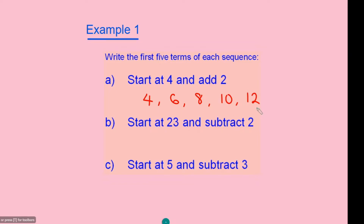For question B, we start at 23 and subtract 2. So the sequence looks like this: 23, subtract 2 gives 21, subtract 2 gives 19, subtract 2 gives 17, subtract 2 gives 15.